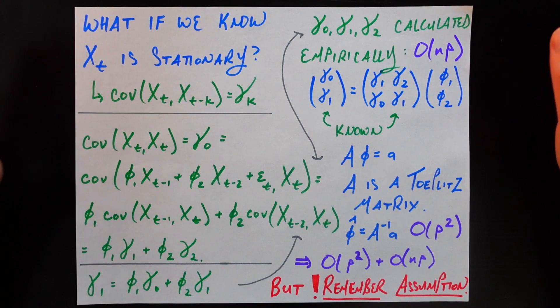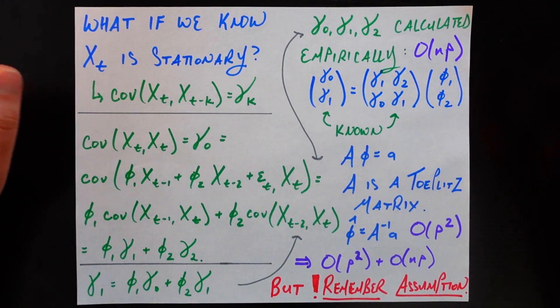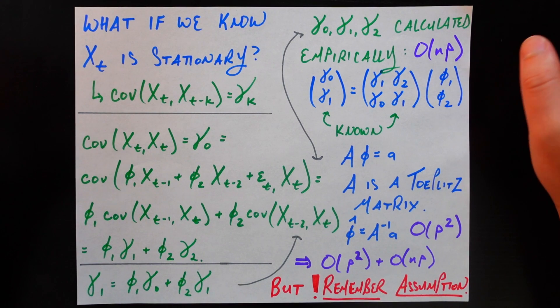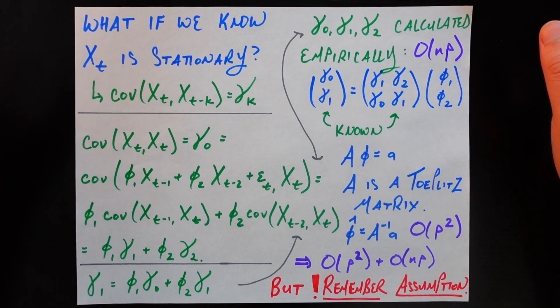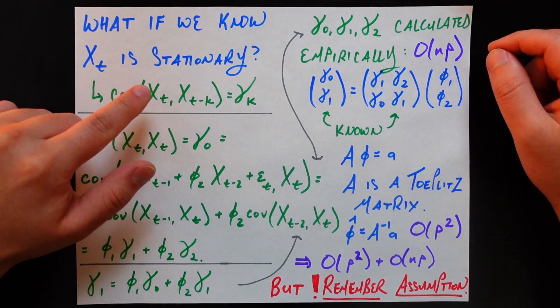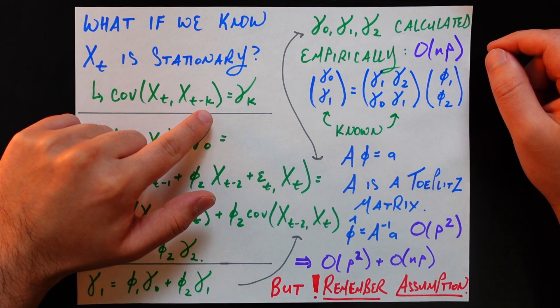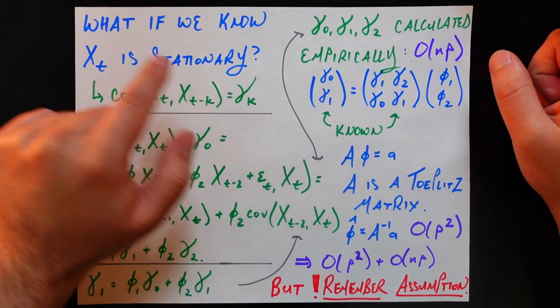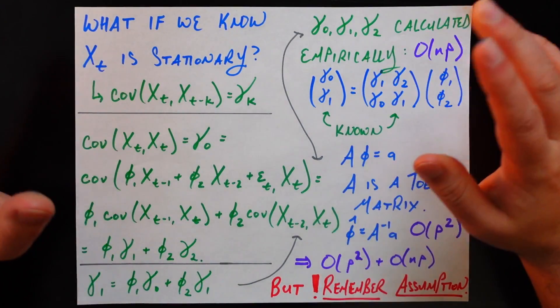So we're going to assume here, somehow, whether we were told, or whether we calculated it, somehow we know that the time series X_t is stationary. Now there's a bunch of conditions that go into stationarity, but the only one that's going to matter for us today, is that the covariance of the time series, and the time series lagged by k, is just going to be a function of that lag k. It's just going to be gamma sub k. Now, as opposed to what? As opposed to that being a function of the exact time we measure it as well. Notice that here,